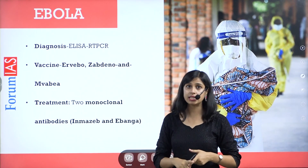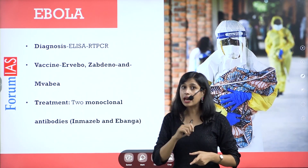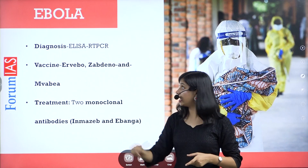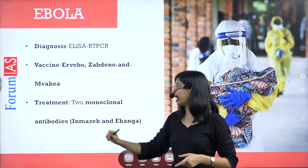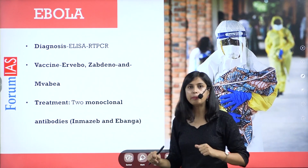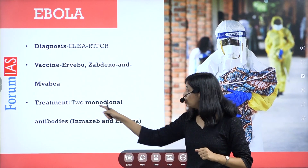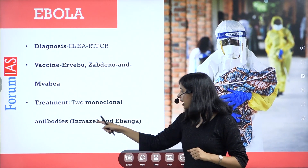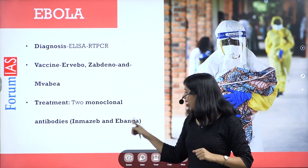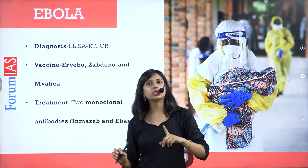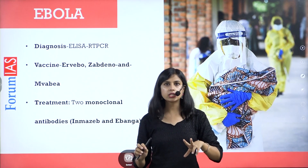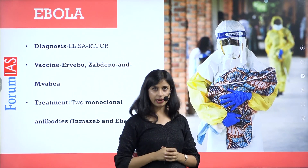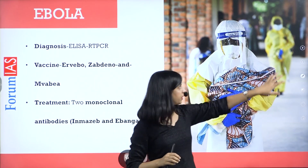So these vaccines are available for Ebola — not for Zika or Nipah, but specifically for Ebola. Treatment is also possible using two monoclonal antibodies: Inmazeb and Ebanga. So for Ebola, treatment is possible, vaccines are available, and for diagnosis you can use ELISA and RT-PCR tests.